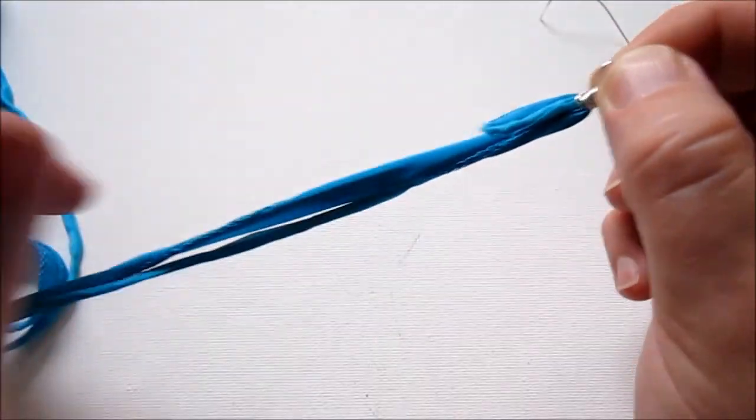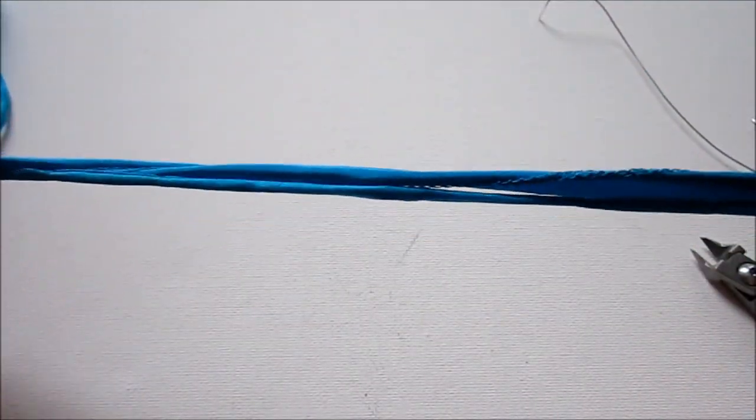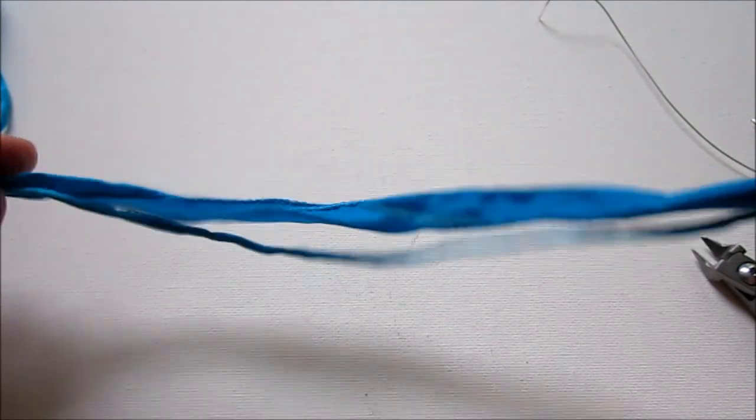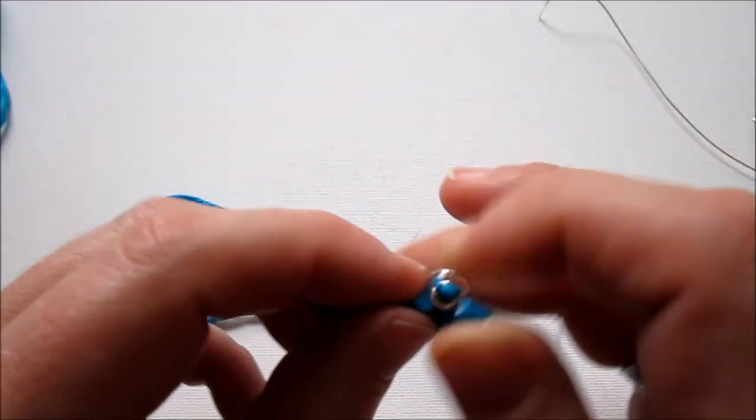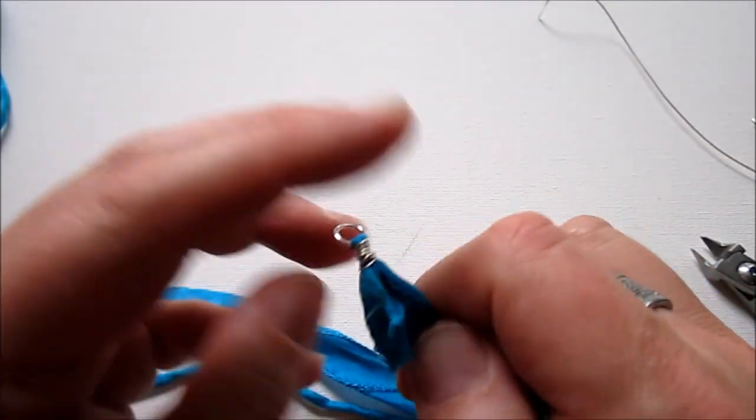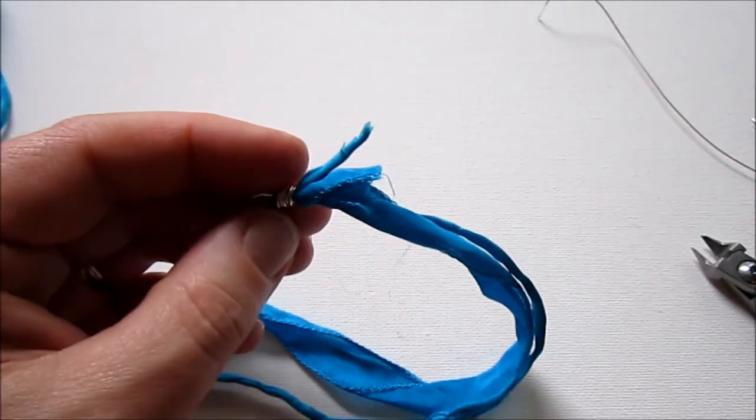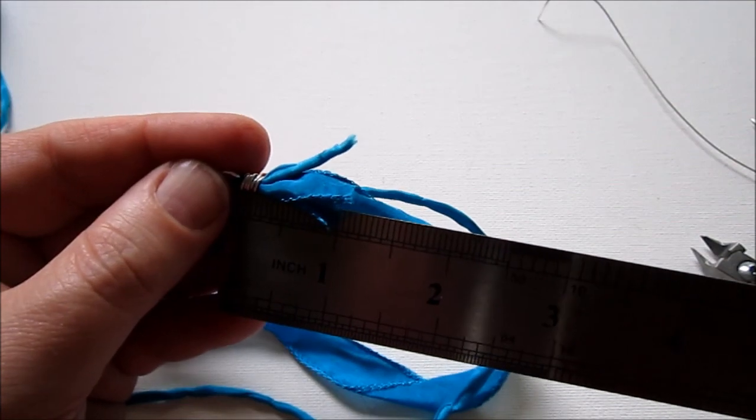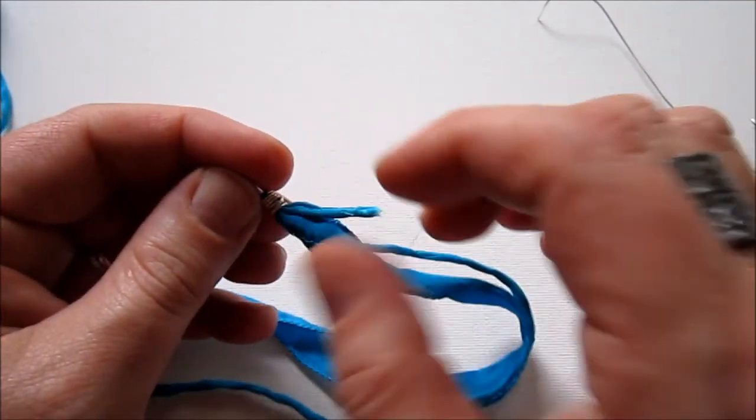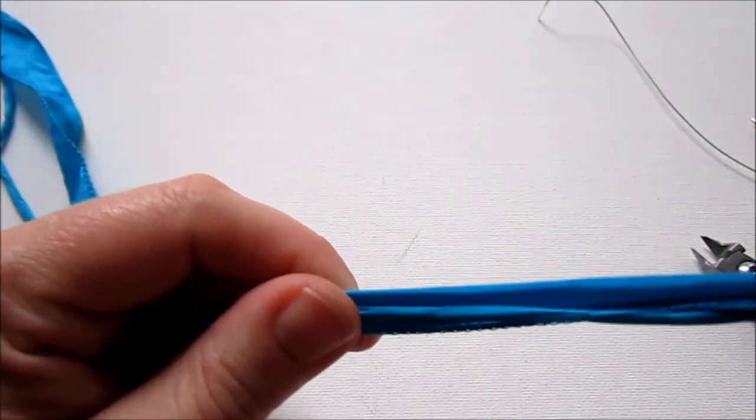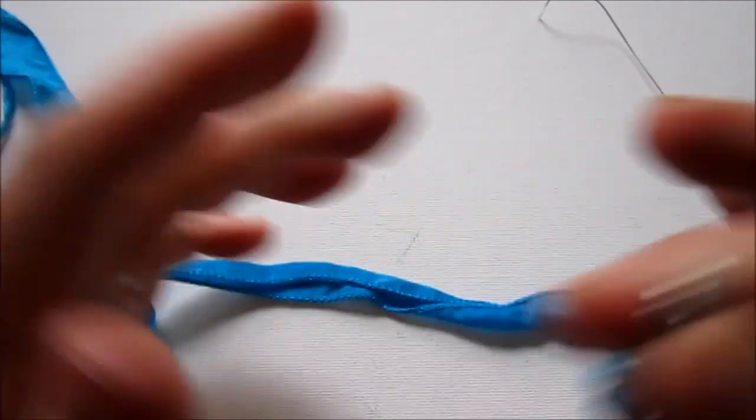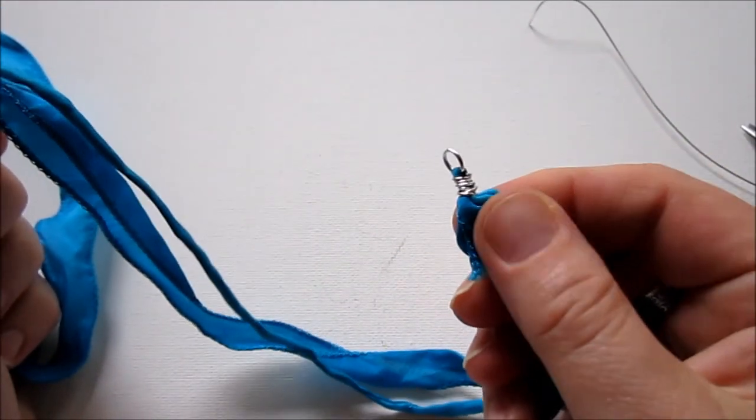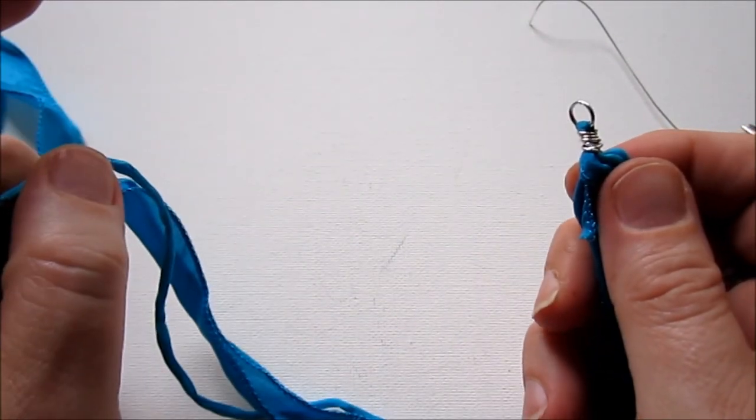Alright. So, now you just want to cut your other end and just leave some extra room. So, I folded over about an inch of the ribbon. And so, add an extra inch for that and do exactly what you did on this side on the other side.